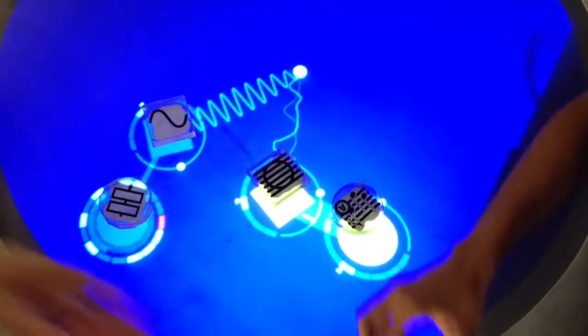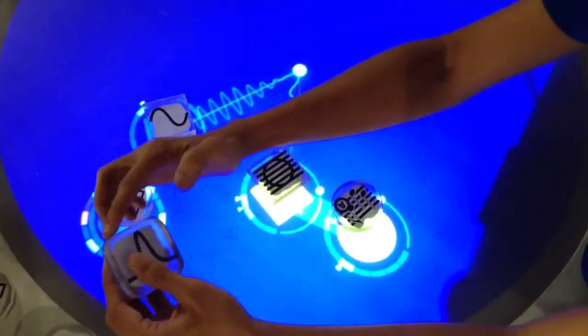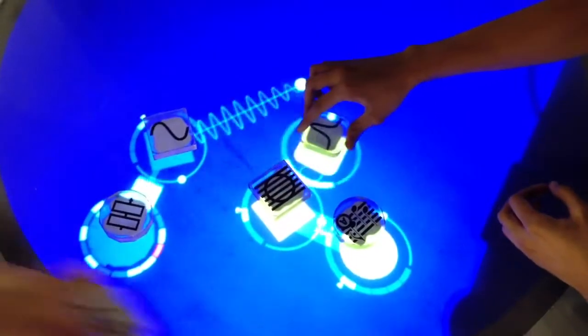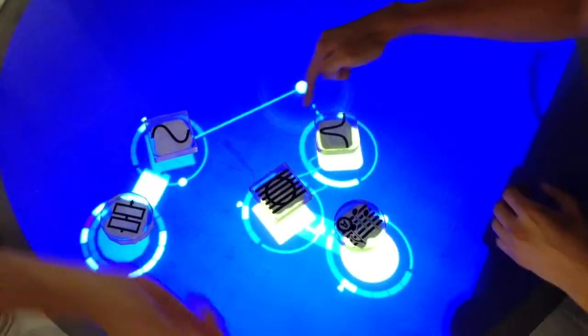And we have filters. The filters, the squares with the rounded corners, what they do is you can use them to filter the sound.